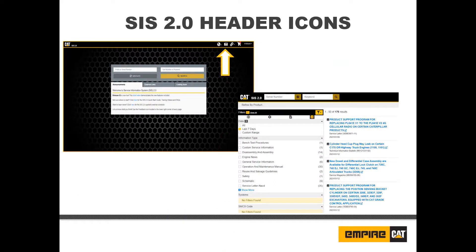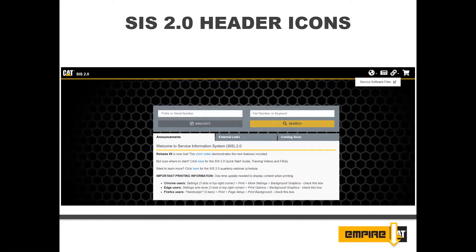Next is the newspaper icon. This icon shows the last seven days of updates to Sys 2.0. The available media will depend on your subscription. Next, we have the chain link icon. This houses links to external applications whose data are not directly integrated into Sys 2.0.